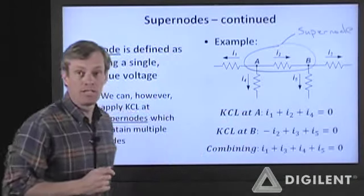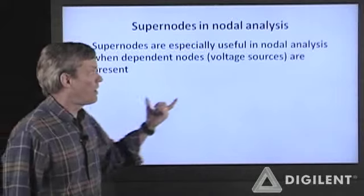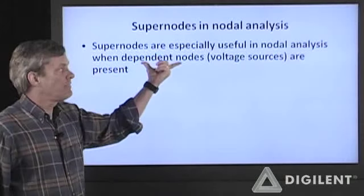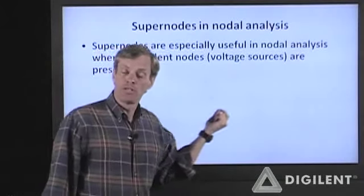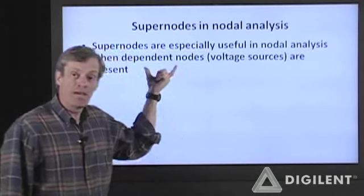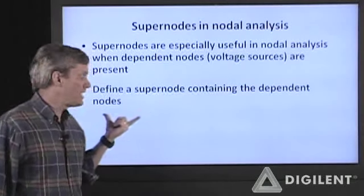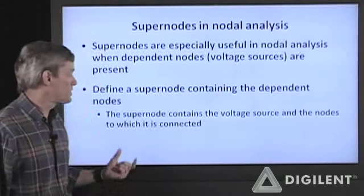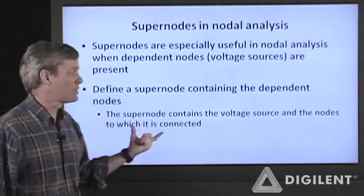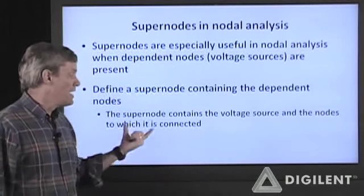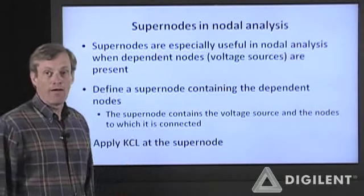Sometimes using a supernode is useful, sometimes it isn't. One place where it's almost always useful is in nodal analysis when you have dependent nodes — these occur when you have a voltage source, which constrains the voltage difference between its terminals, making those two nodes dependent. What you can always do is define a supernode which contains these dependent nodes so the voltage source is inside the supernode. Then apply KCL at that supernode, which allows you to reduce the number of unknowns you have to deal with.